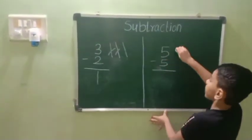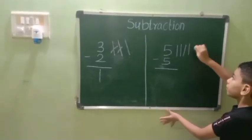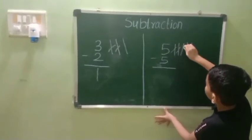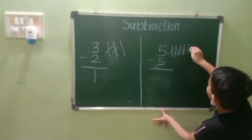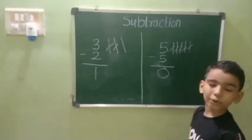5 minus 5. Counting 1, 2, 3, 4, 5. Subtracting 1, 2, 3, 4, 5. Our answer is 0. Thank you friends.